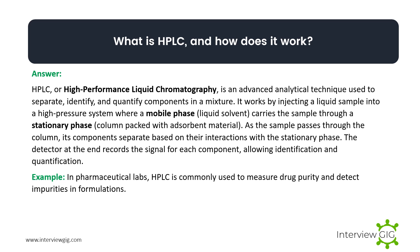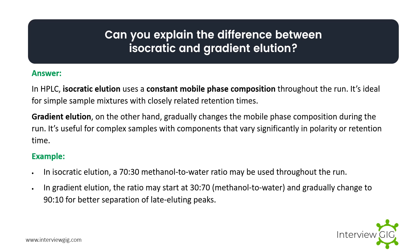Example: in pharmaceutical labs, HPLC is commonly used to measure drug purity and detect impurities in formulations. Can you explain the difference between isocratic and gradient elution? In isocratic elution, a constant mobile phase composition is used throughout the run — ideal for simple sample mixtures with closely related retention times. Gradient elution gradually changes the mobile phase composition during the run, useful for complex samples with components that vary significantly in polarity. For example, a 70:30 methanol-to-water ratio may be used in isocratic, while gradient may start at 30:70 and change to 90:10 for better separation.